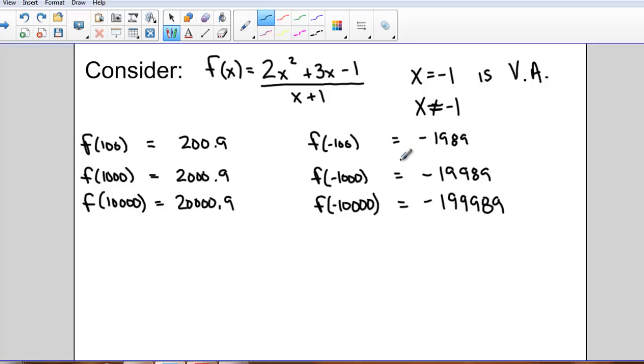So again, these numbers aren't approaching anything. So we can conclude that there's no horizontal asymptote.